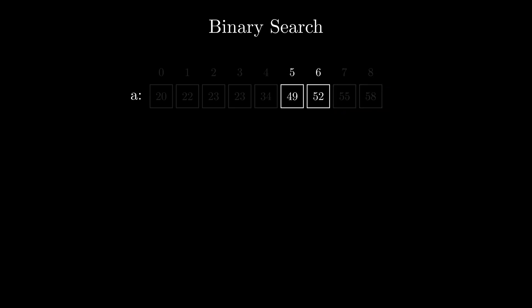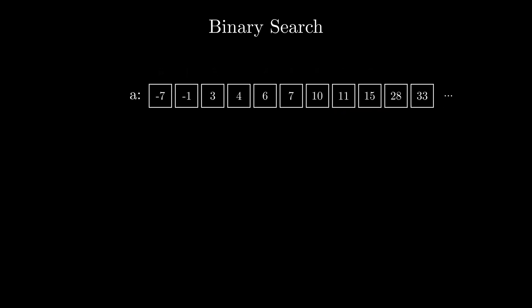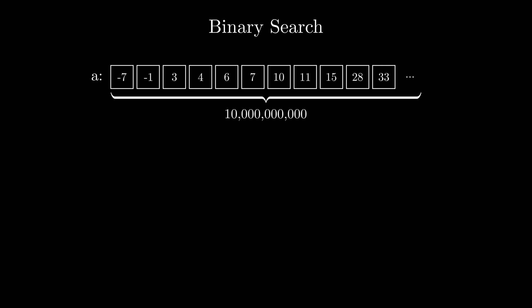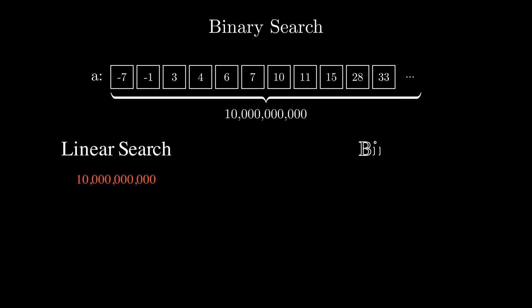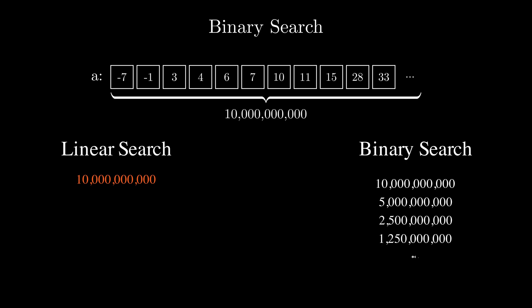Now imagine that instead of having a few elements in the list, there were 10 billion elements instead. If we would look through all the elements from first to last trying to find the query number, we would perform 10 billion operations in the worst case. But with binary search, we're able to half the search space on each iteration. So with a single operation we would get from 10 billion to 5 billion elements, then to 2.5 billion and so on. In the end, instead of performing 10 billion operations, we would just perform 32.